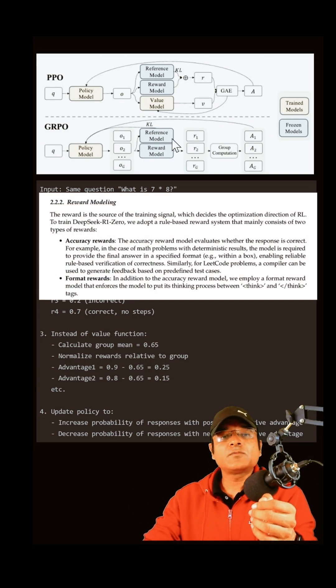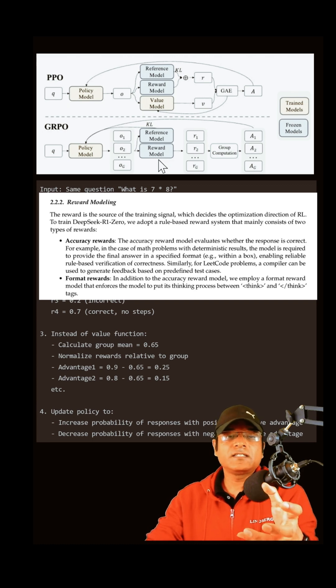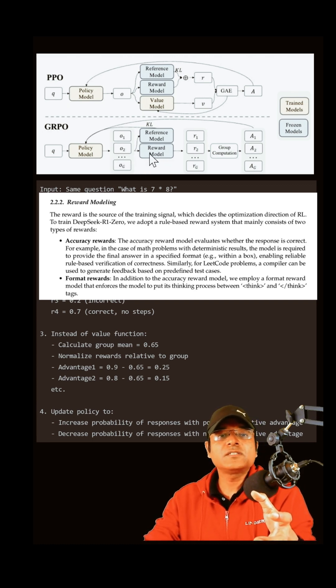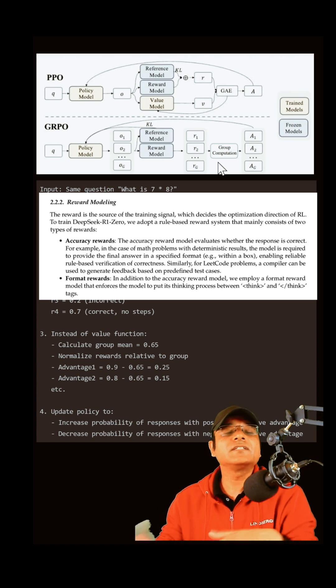This is what the reference model is used for. The reward model is basically when we give input to the policy model, it gives a reward. With the reward we do computation, and then with the answer we do reinforcement learning.